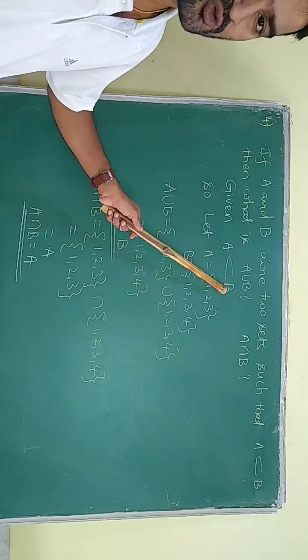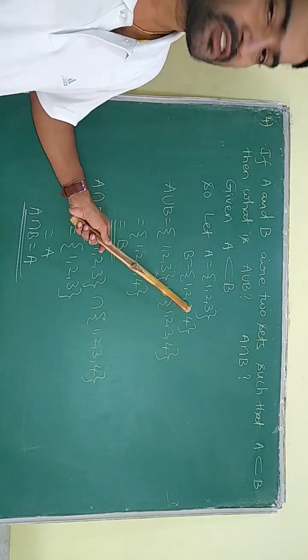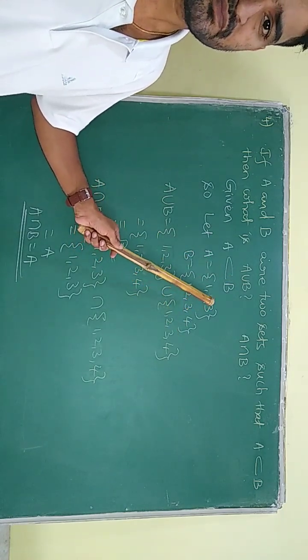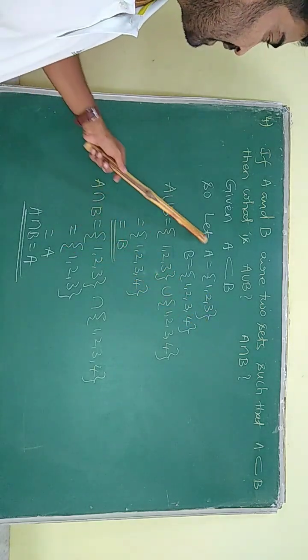Now why take B as {1, 2, 3, 4}? Because A is a subset of B, that means B is the bigger set comparatively. So at least one or two elements we have to write extra in the set B. Okay, so I assume that A and B is like this.